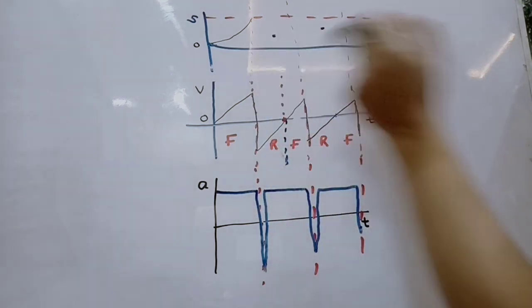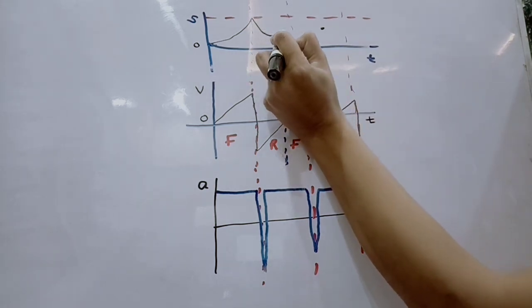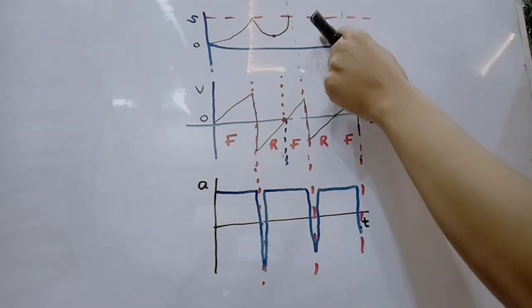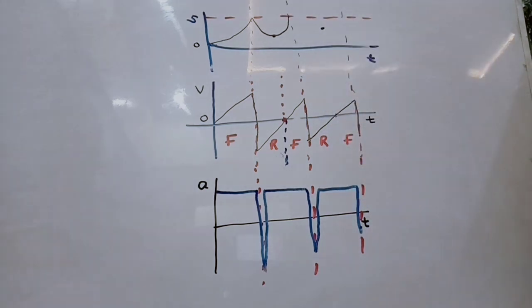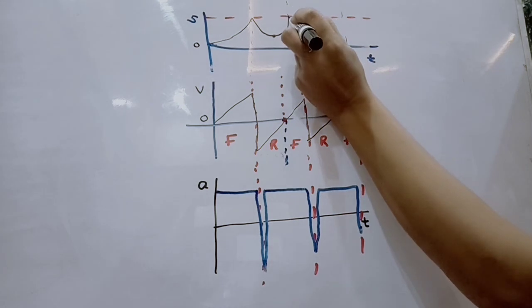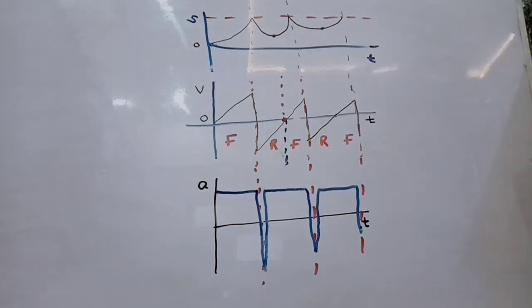Over here, this displacement would be lesser because it is a shorter interval. So we can draw it like this. That's how our displacement-time graph would look like.